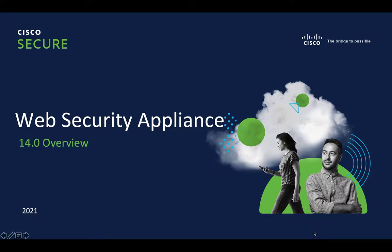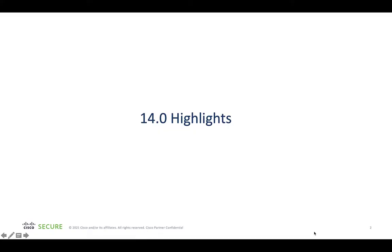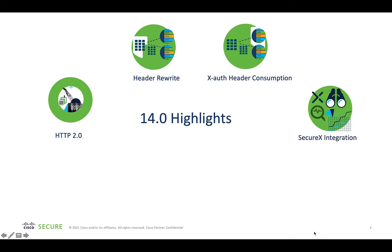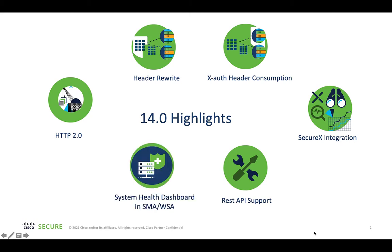Hi folks, this is Vinod, I'm part of Cisco product management team. Today we are going to talk about new features available in Web Security Appliance in version 14.0. There are six features we will talk about today: HTTP 2.0 support in WSA, header rewrite and X-Auth header consumption support for proxy chaining use cases, SecureX integration with WSA, REST API for configuration, and finally system health dashboard in SMA and minor changes in system health dashboard for WSA as well.